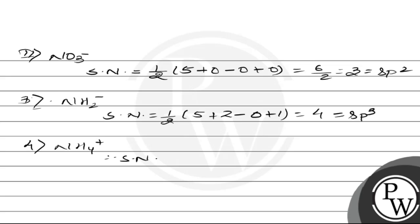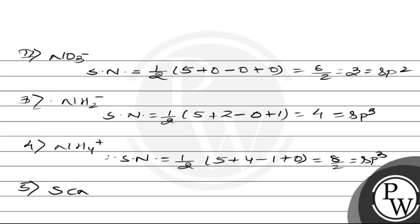The fourth species is NH₄⁺. The steric number of NH₄⁺ is calculated as half of (5 + 4 − 1 + 1) = 8/2 = 4, which corresponds to sp3 hybridization.